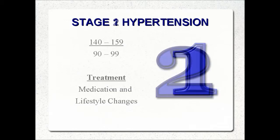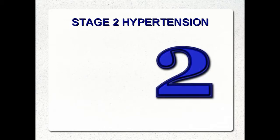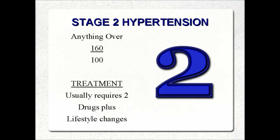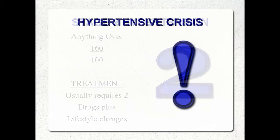Next, we have stage two hypertension, defined as any reading that is 160 over 100 or higher. Stage two hypertension is a serious condition and requires aggressive treatment. Doctors will often start people with stage two hypertension on two medications at the same time, in addition to lifestyle changes.